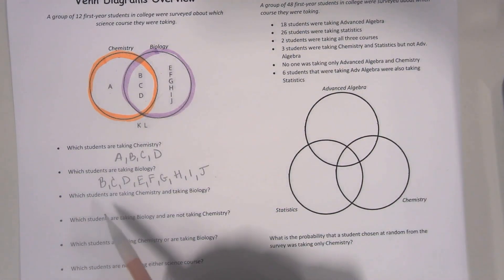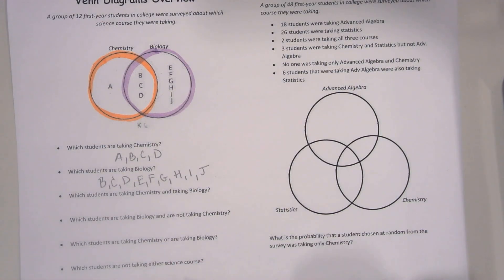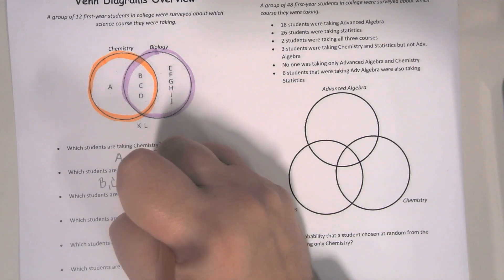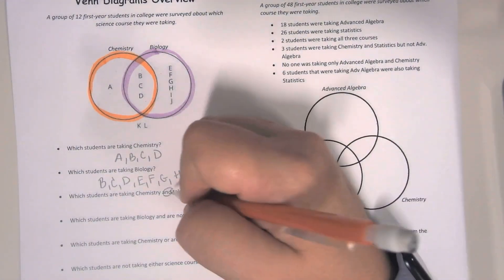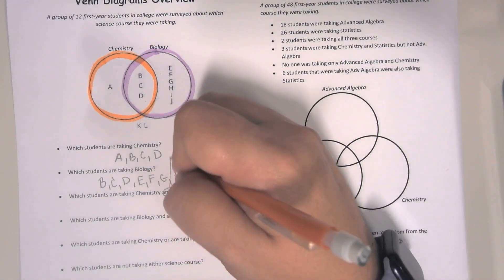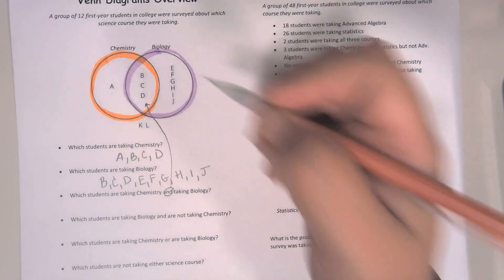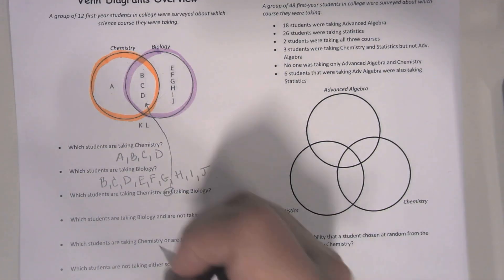Which students are taking chemistry and biology? So when we see the word 'and,' that means they're taking both at the same time. So we're looking at the students that are in this overlap area between both circles. That's only students B, C, and D.